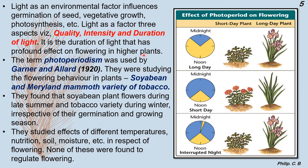Duration of light has a profound effect on flowering in higher plants. The term photoperiodism was coined by Garner and Allard in 1920. They studied flowering behavior in soybean and the Maryland Mammoth variety of tobacco, finding that soybean flowers during late summer and tobacco during winter, irrespective of germination and growing season. They studied effects of different temperatures, nutrition, soil, and moisture on flowering, but none of these were found to regulate flowering.